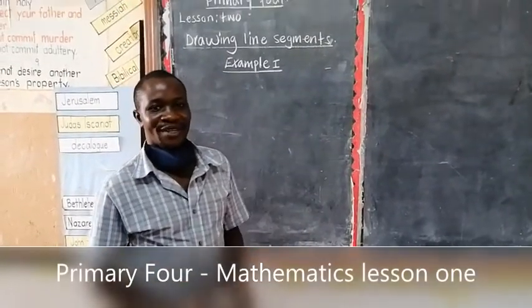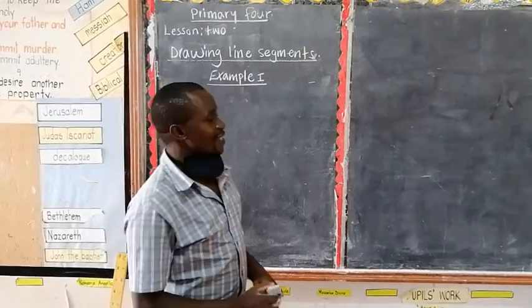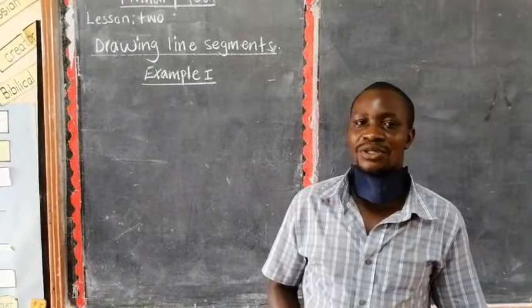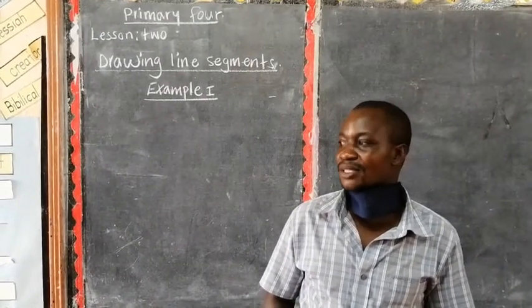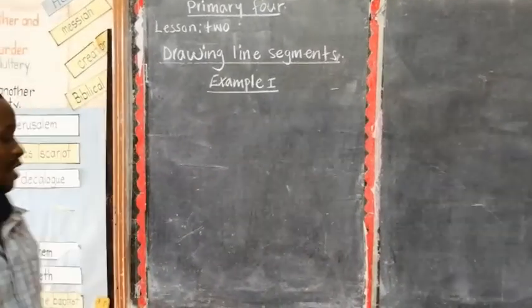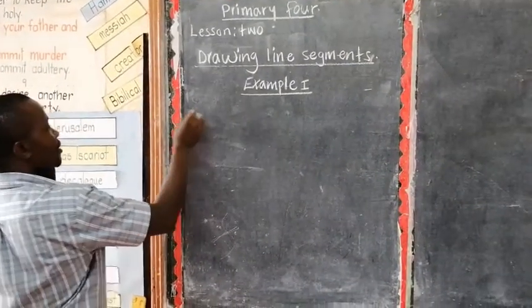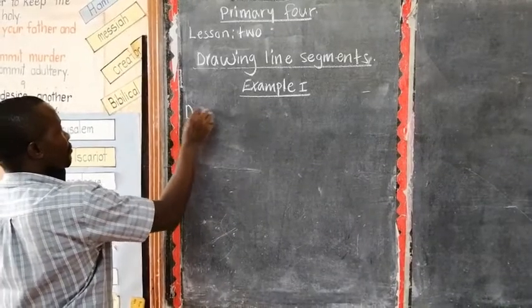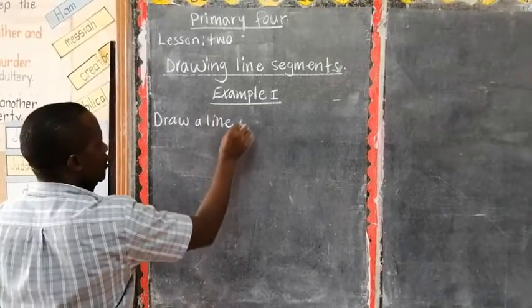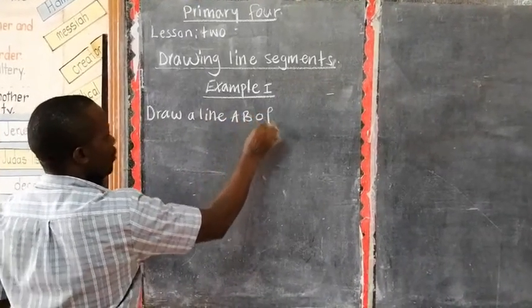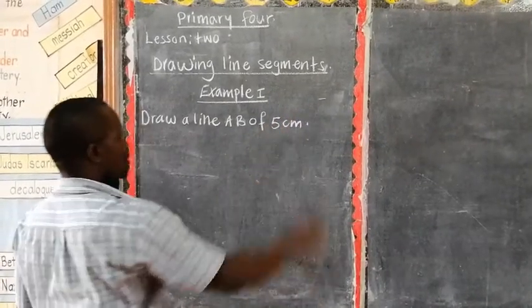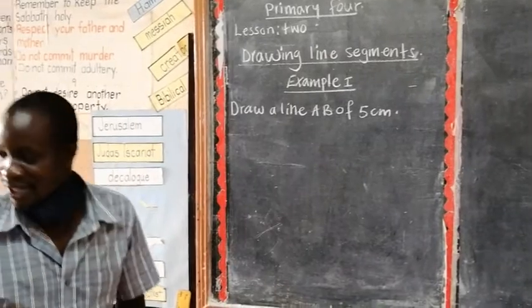Welcome to our second lesson. In this lesson we are going to look at drawing line segments. Example one says draw a line AB of 5 centimeters.